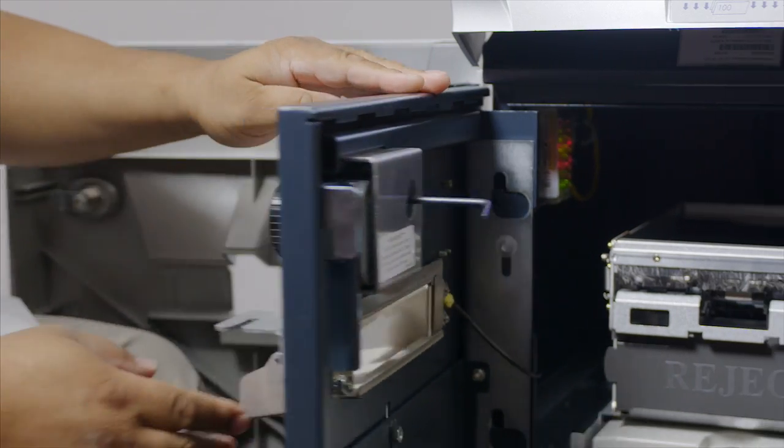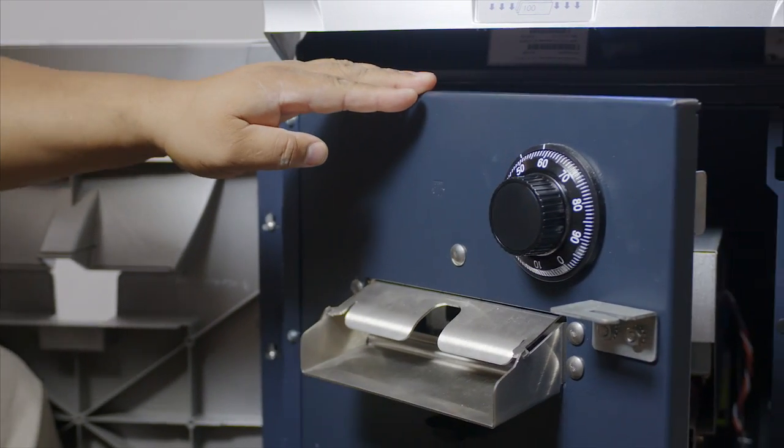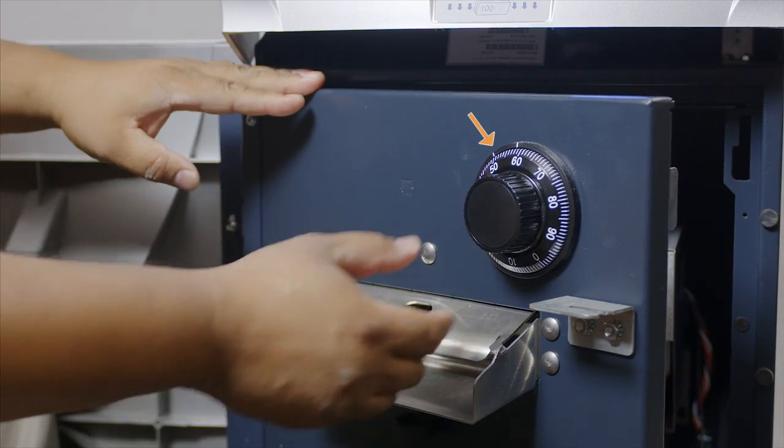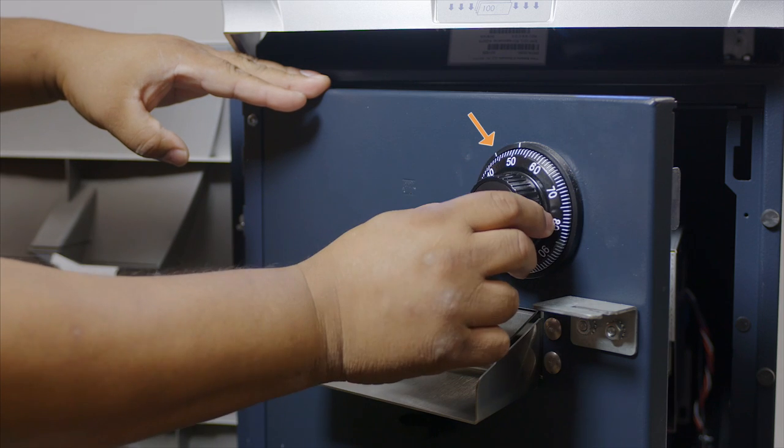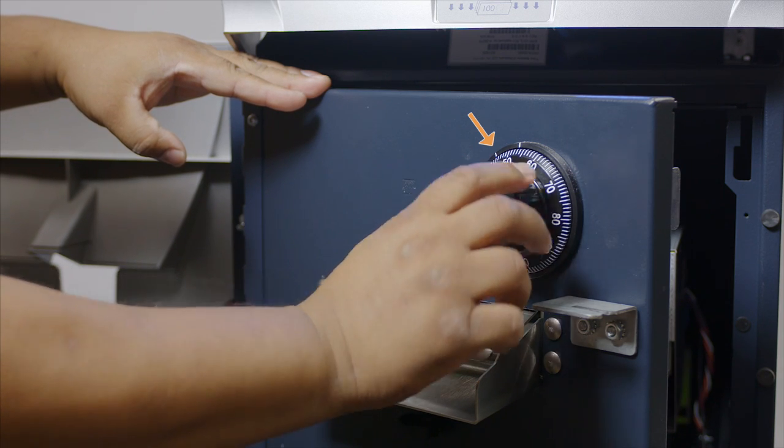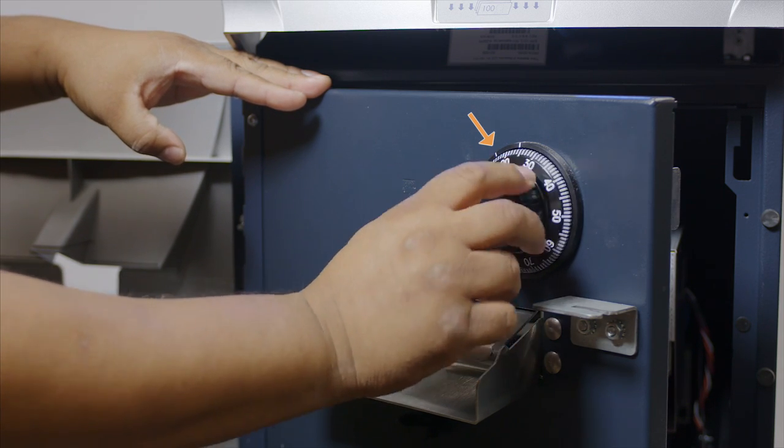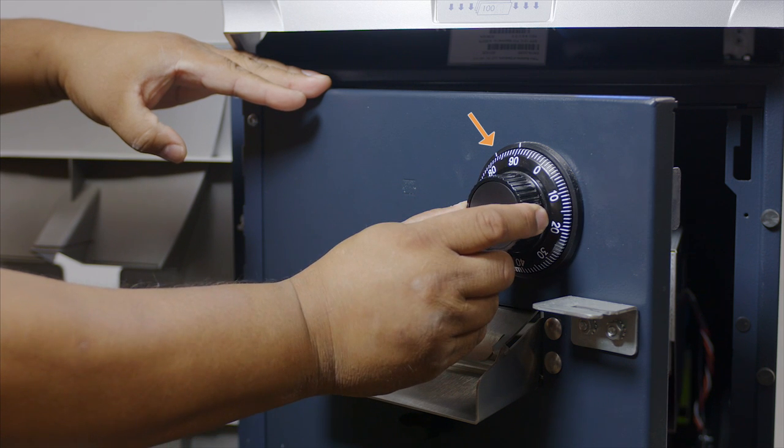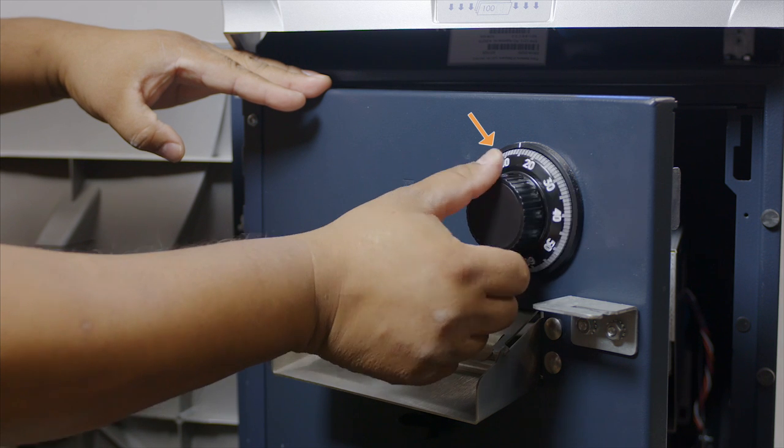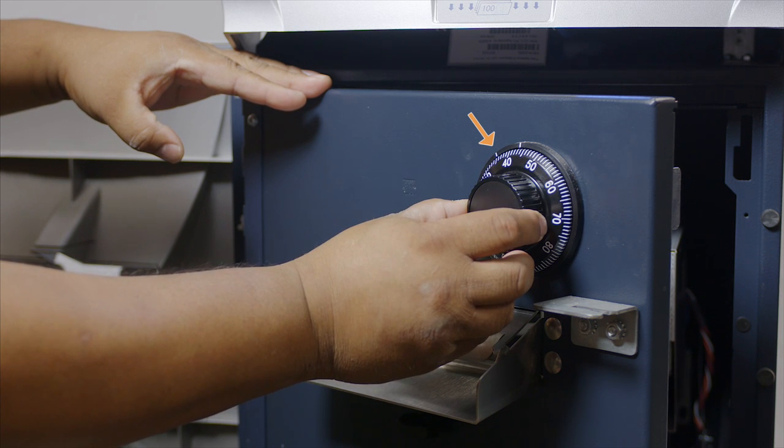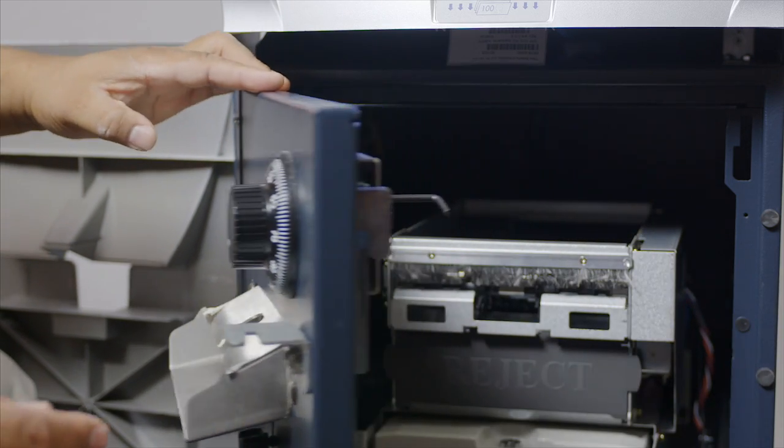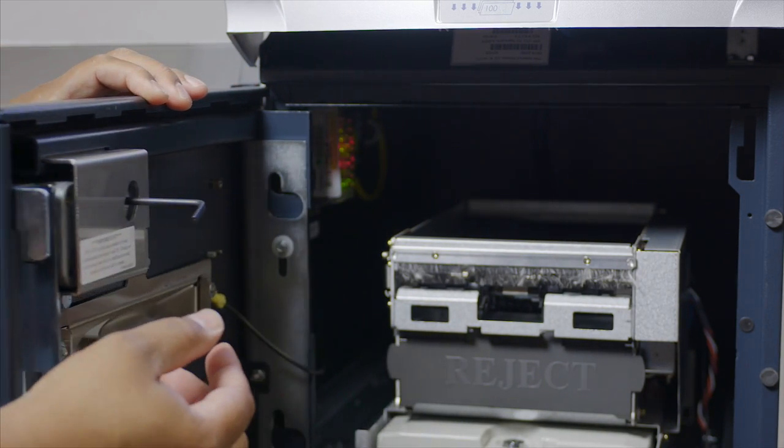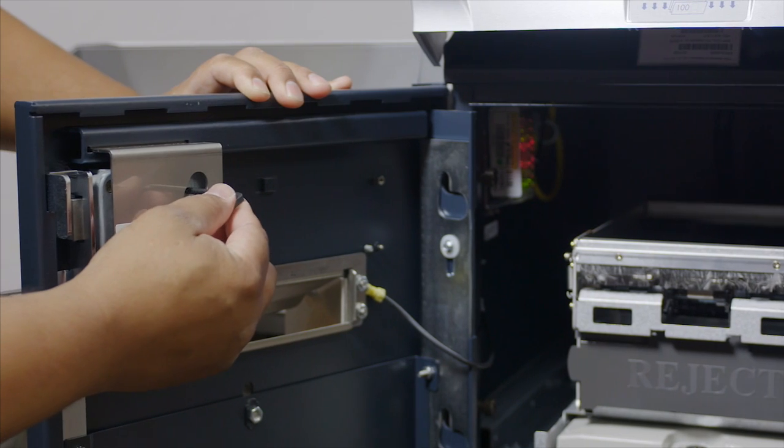Now you can put in your three digit combination. Turn counterclockwise four times past the first digit. Then clockwise three times to the second digit and then counterclockwise two times to the third digit. Remember not to use numbers 1 through 20 for that last digit. Now you can remove your change key.